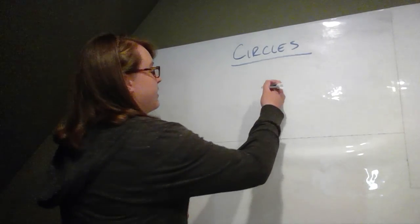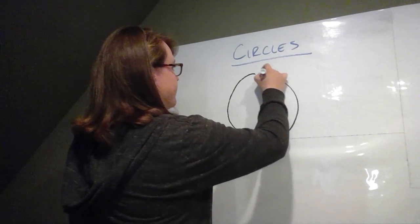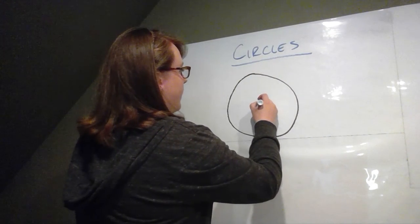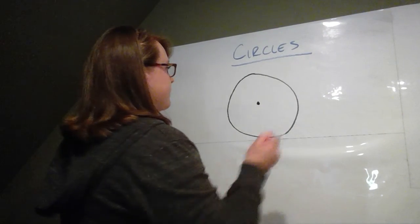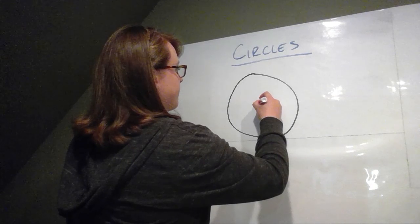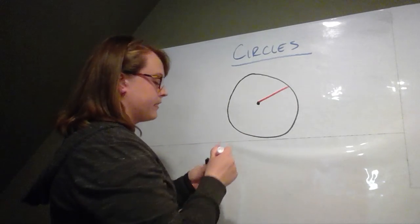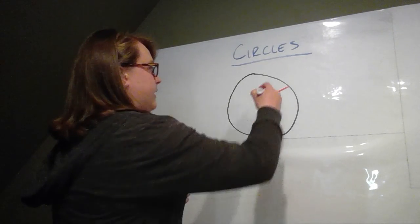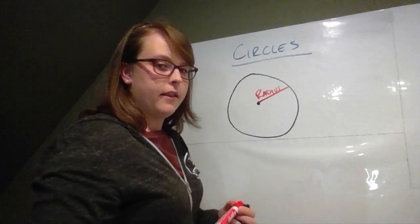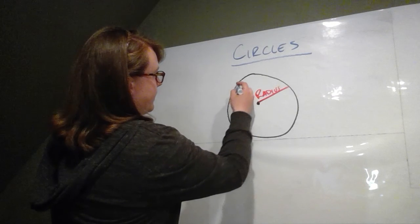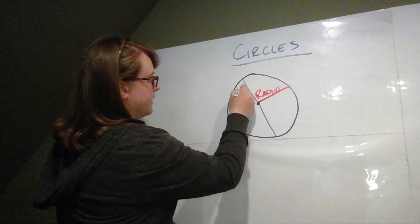First thing we need to talk about with circles is what is a radius and a diameter, because if we don't know those things, then it makes it really hard to talk about anything else. Here's our circle. This is the center of the circle. A radius is the distance from the center of the circle to the edge, and it's half of the distance all the way across. This would be our radius. The diameter is the distance all the way across the circle going through the center. So here is our diameter.